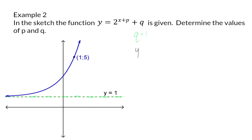So, in the given equation, we now have 2 to the power of x plus p plus 1. To determine the value of p, we were given another coordinate, which we can substitute into x and y's place. y will change to 5 and x will change to 1, and now we can solve for p in the exponent.